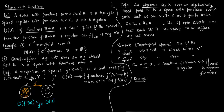Another remark: a closed subset of an algebraic set over k is an algebraic set in a natural way, because any closed subset of an affine algebraic set is an affine algebraic set.